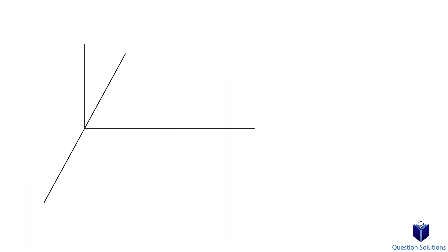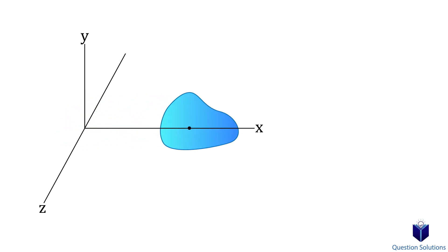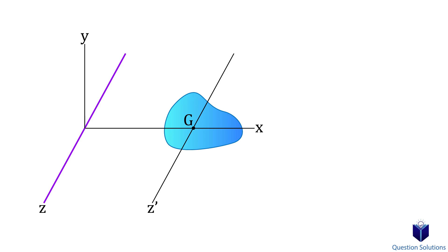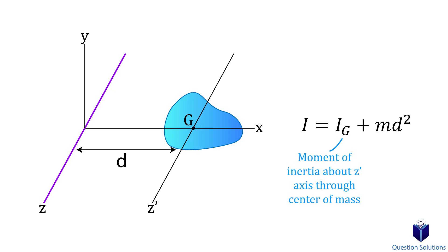Now what we talked about works when the axis we're looking at — x, y, and z axes — goes through the center of mass of our object. If it doesn't, we need to use something called the parallel axis theorem. Imagine we have an object and we're finding the moment of inertia about an axis that doesn't go through the center of mass. We can use this equation: the first part is the mass moment of inertia about the axis through the center of mass, and the second part is the mass times the distance between the parallel axes squared.